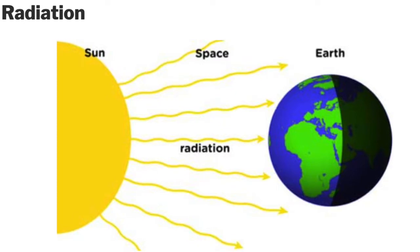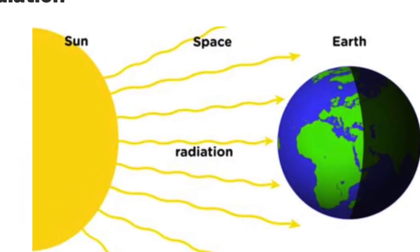While heat can move in any direction, it really moves in three distinct ways: radiation, conduction, and convection. Radiation are the waves that transfer heat from afar — like the ones we get every day from our yellow dwarf star.